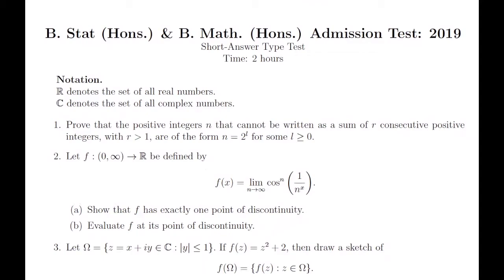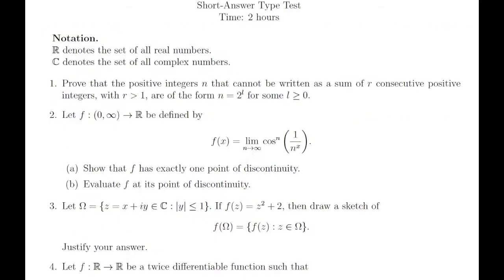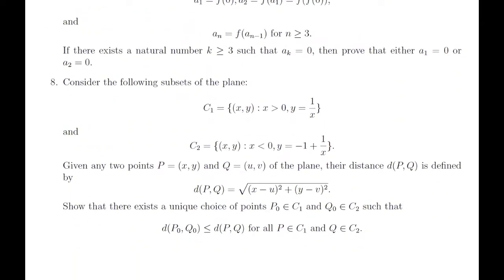Hello everyone, in this video we are going to discuss the eighth problem which came in ISI B.Math 2019. So here is the problem which says that you have been given two subsets of the plane, where the first subset C1 equals those points where x is greater than 0 and y equals 1 over x.